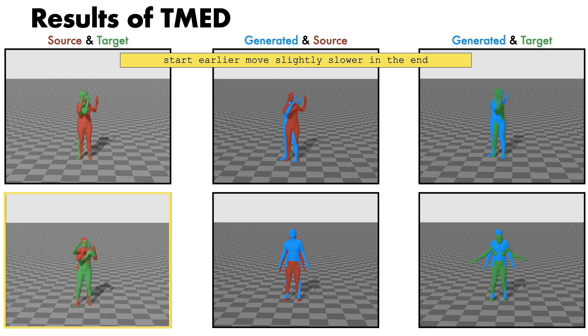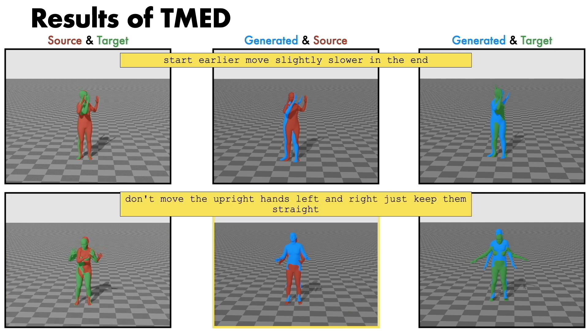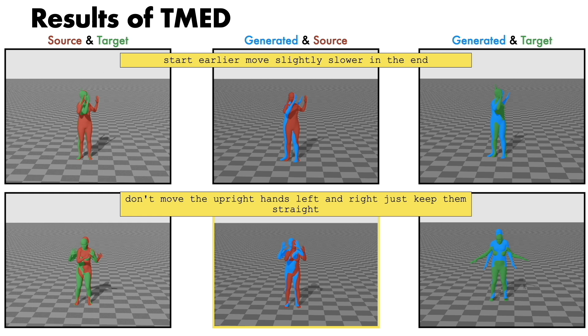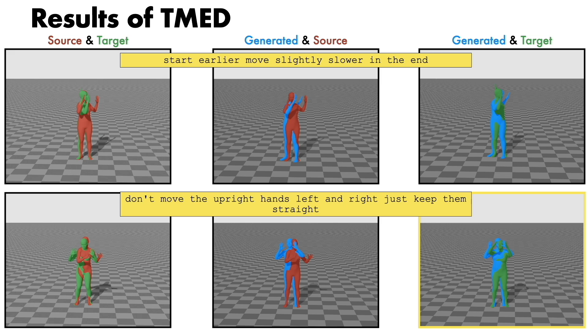Finally, given the animation and the edit text don't move the upright hands left and right, just keep them straight, our generation keeps the hands static in a similar pose to the source motion.